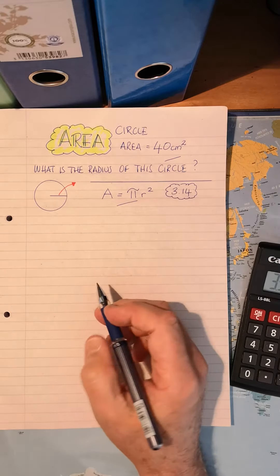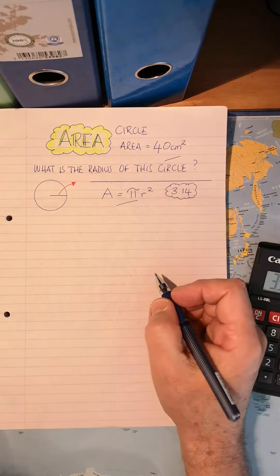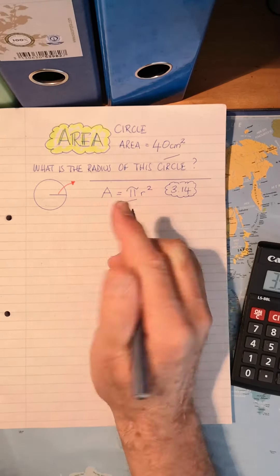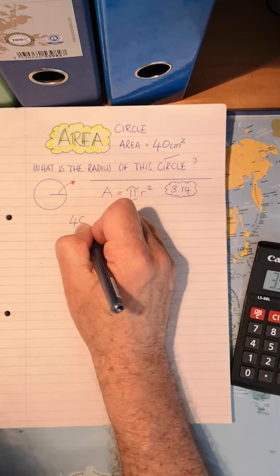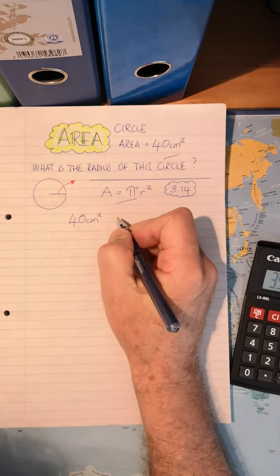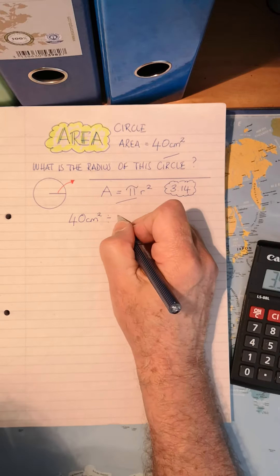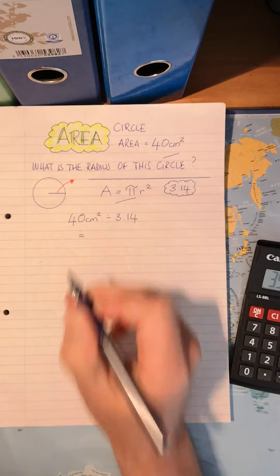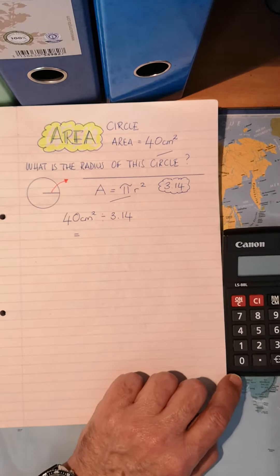So quite easy. To work out this sum, to find out the radius, all we're going to do is, because we know the area, there it is, the area, we're going to put 40 centimeters squared, and we are going to do opposite. We are going to divide it by 3.14, and let's see what we get as an answer.